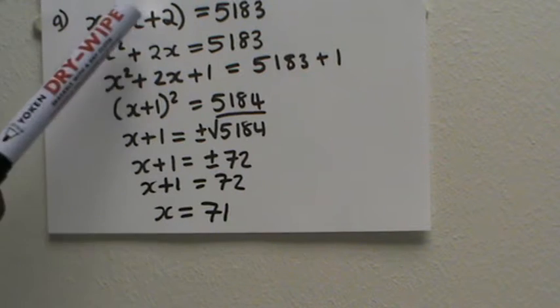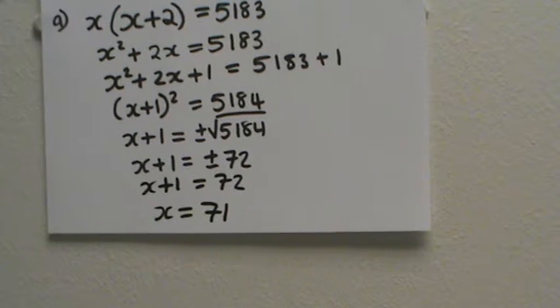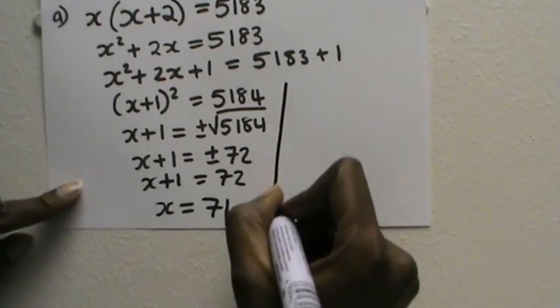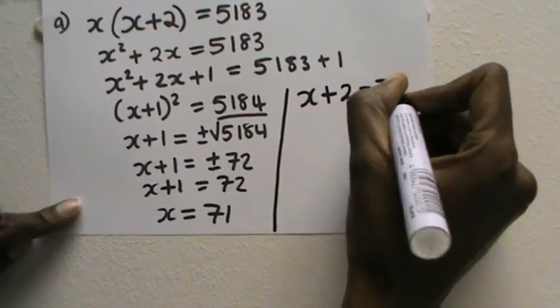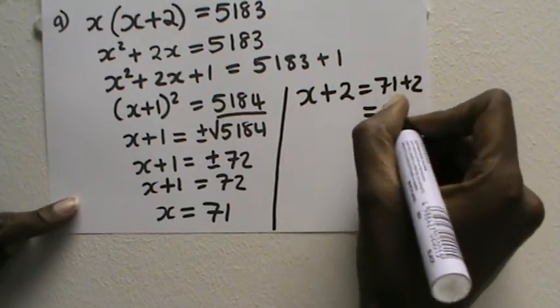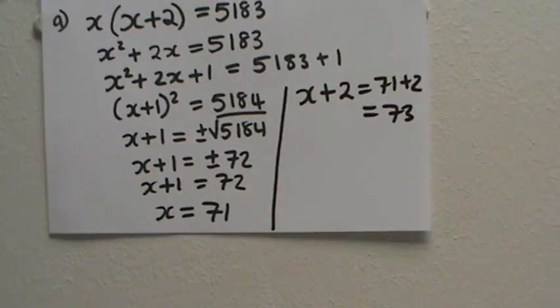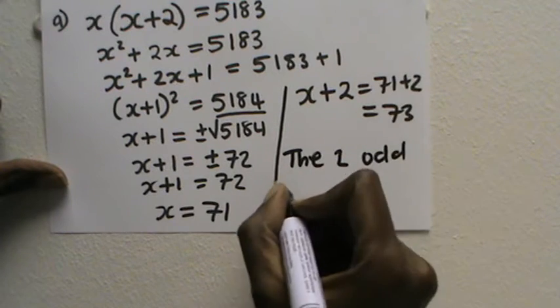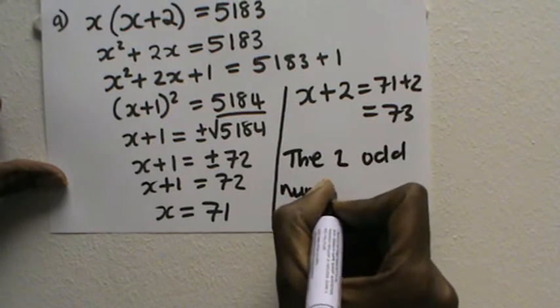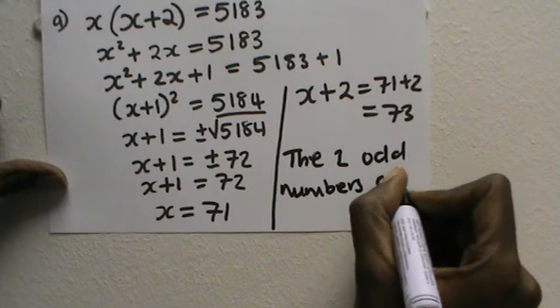is x, then the next one should be x + 2. So here I can just say x + 2, this is 71 + 2, which is 73. So I can write a statement: the two odd numbers are